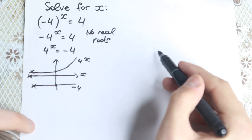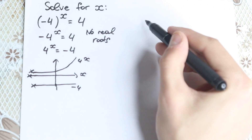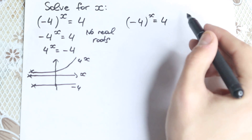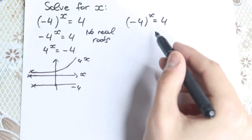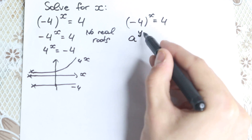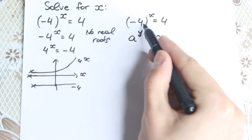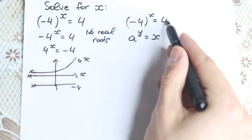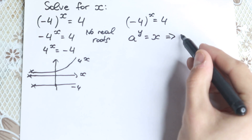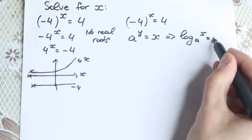But that was the special case without parentheses. In our case, we do have parentheses, so we work with (-4)^x = 4. This function has the form a to the power y equals x. Here our base a is minus 4, the exponent y is x, and the result is 4. This special case can be solved using logarithms: log base a of x equals y.